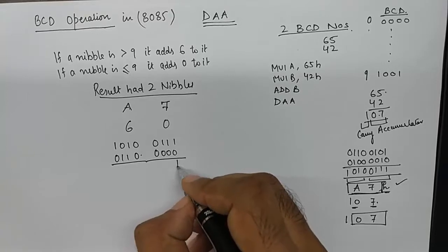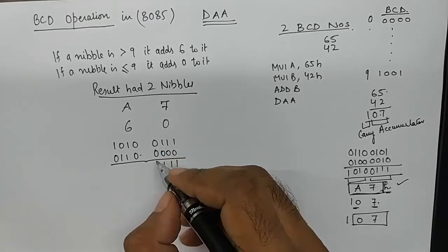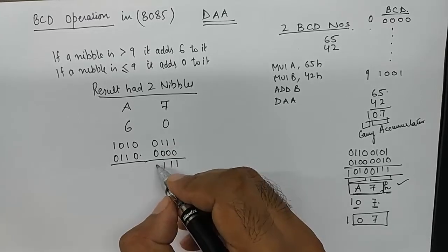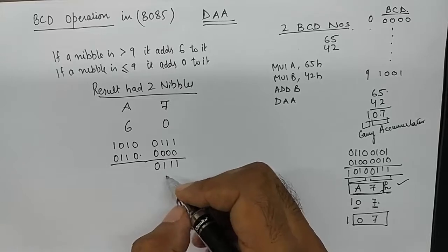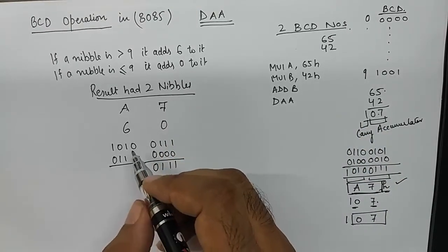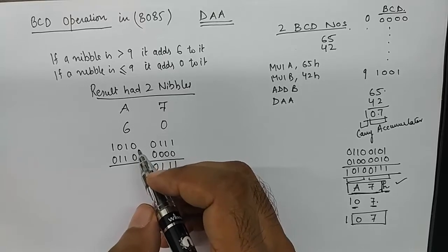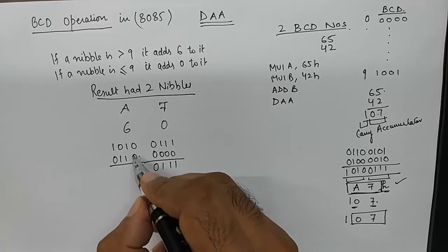So what will happen is any number which is smaller than 9 or equivalent to 9 would be added with 0, resulting in the same number in the result also. Any number which is greater than 9 would be added with 6.